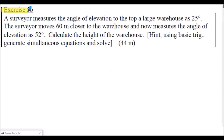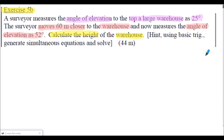Exercise 5b requires a very similar solution to the previous example. A surveyor measures the angle of elevation to the top of a large warehouse as 25 degrees. The surveyor moves 60 metres closer and now measures the angle of elevation as 52 degrees. We've got to calculate the height of the warehouse — the hint is to use basic trig and generate simultaneous equations. The answer is 44 metres. If you feel you can solve this, stop the presentation and attempt it; otherwise the commencement of the solution is on the following slide.